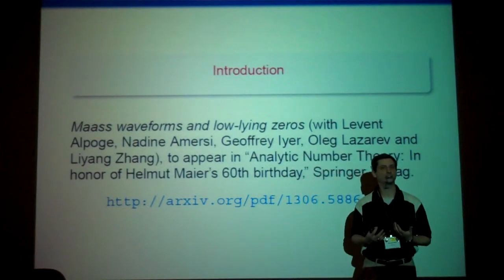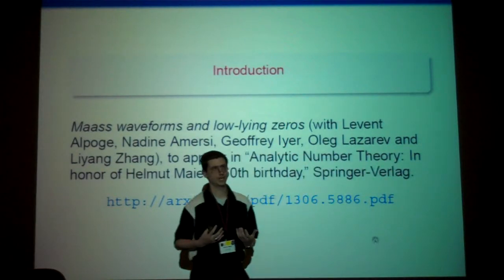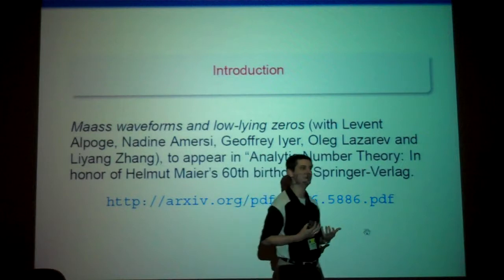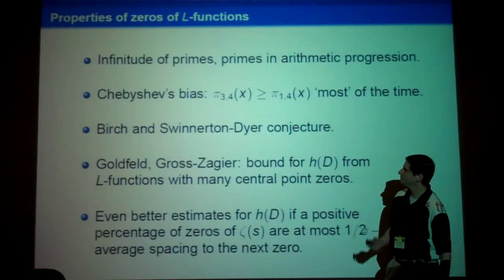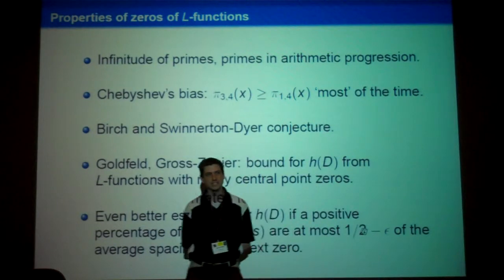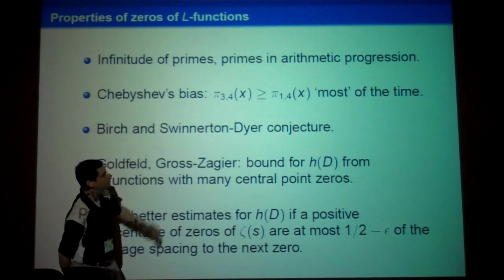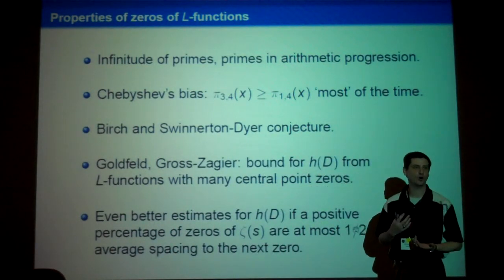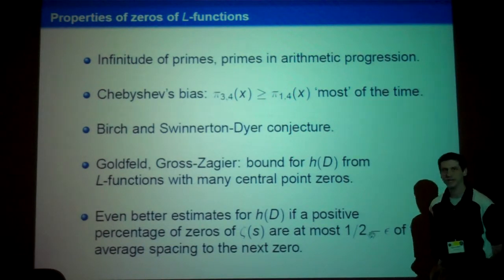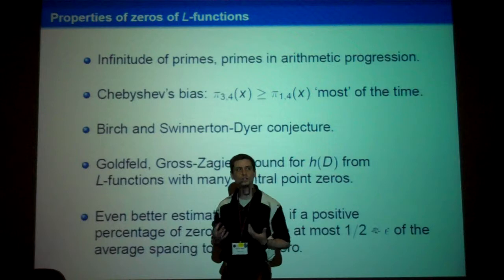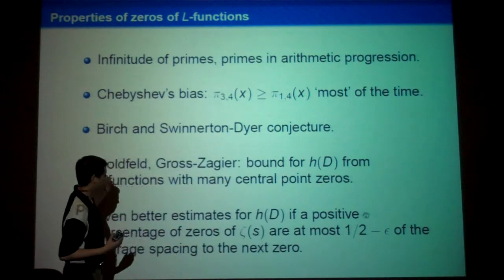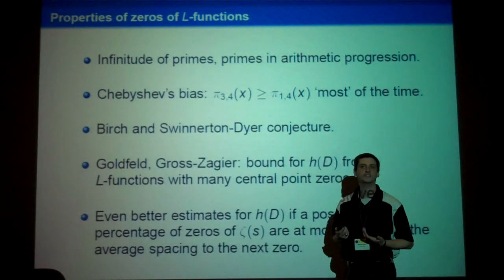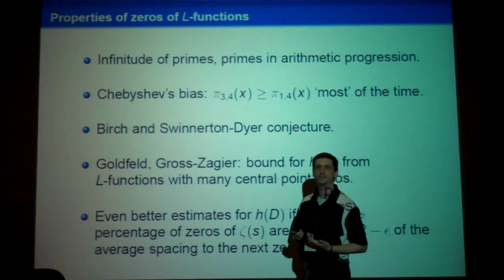The first part of the talk is an introduction to the Katz-Sarnak theory of low-lying zeros. I've just finished a paper with some of my students from a couple of years ago, and it's a really good write-up describing the general situation. Here are a couple of problems where zeros of L-functions play an important role: the infinitude of primes, primes in arithmetic progressions, Chebyshev's bias — how many primes congruent to 3 mod 4 versus 1 mod 4 up to x — the Birch and Swinnerton-Dyer conjecture, and bounds for the class number.